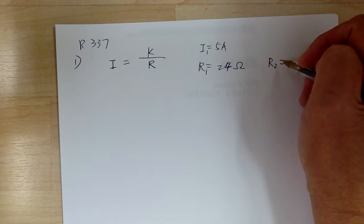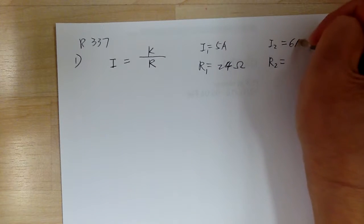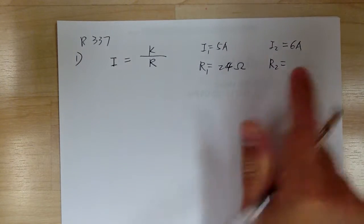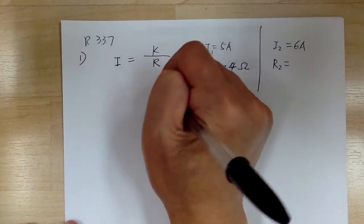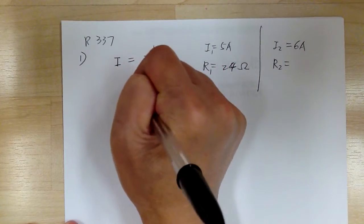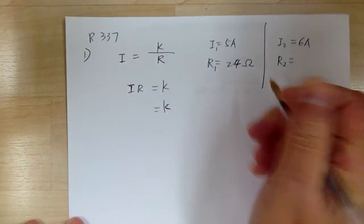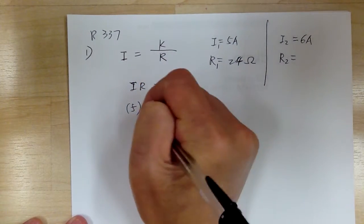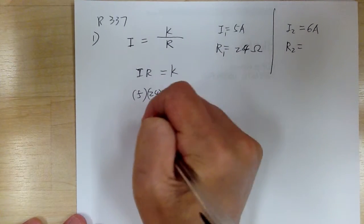It says for what resistance, so you're looking for R₂. So what resistance would the current be 6 amps? So that's what you have. So you can move things around. So k equal to I times R. So k equal to 5 times 24. So k equal to 120.